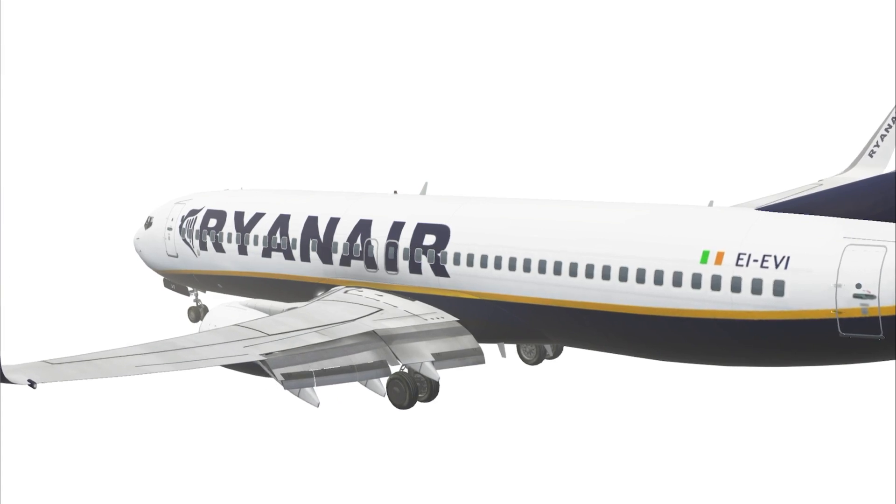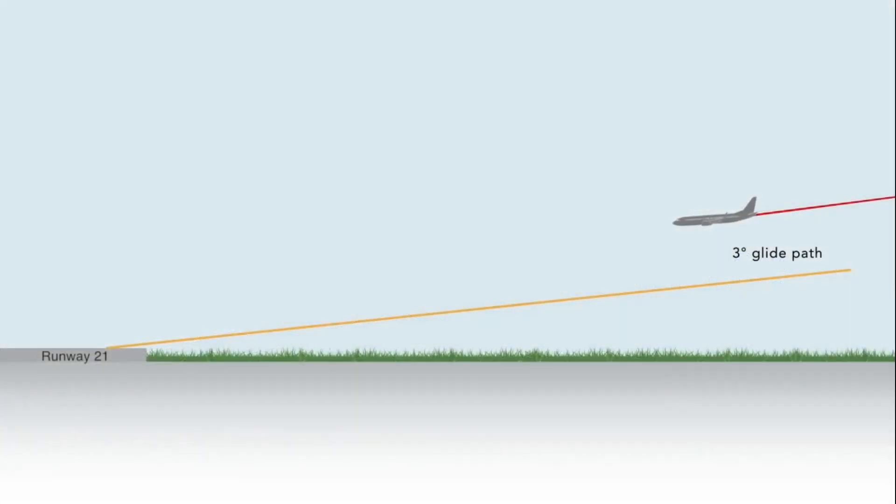The ILS glide path is approached well above the normal 3 degree glide path, where approaching from below is the standard procedure. The result was that the aircraft flew 1000 feet above and almost parallel to the 3 degree glide path.